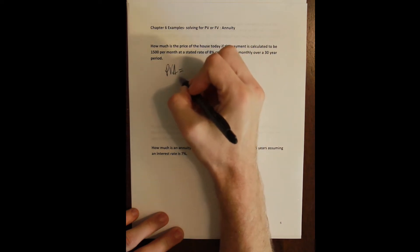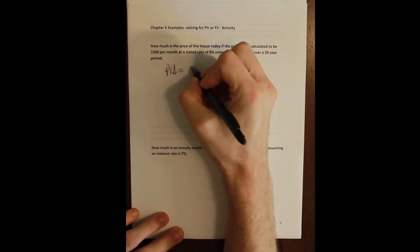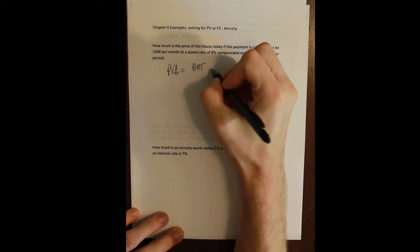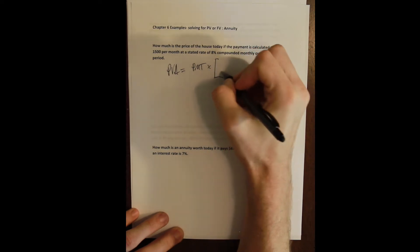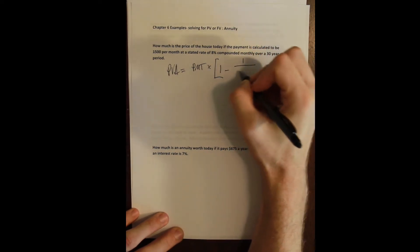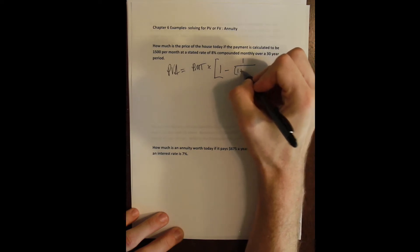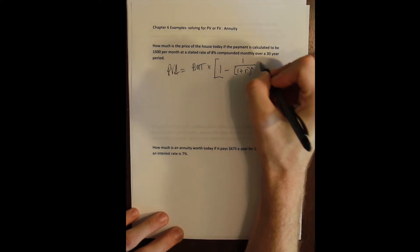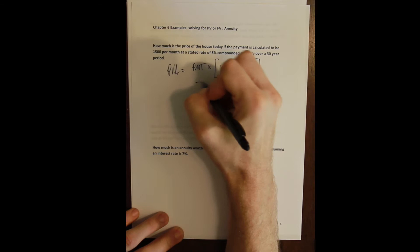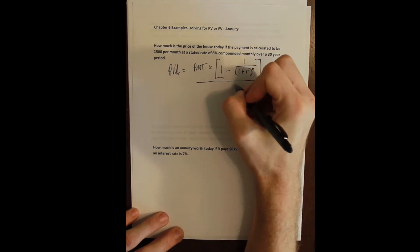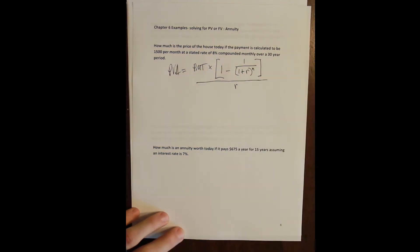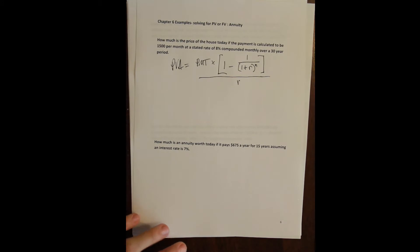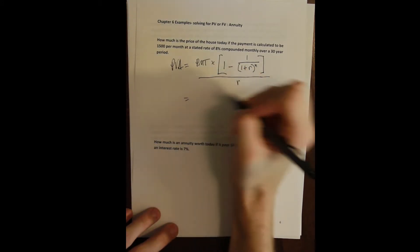The formula for the present value of an annuity is equal to the payment times 1 minus 1 divided by 1 plus the rate raised to the number of periods, all of that divided by the rate. So now we can go and plug all that in.